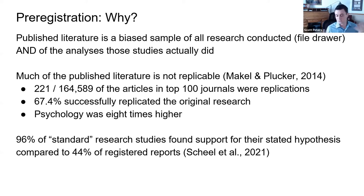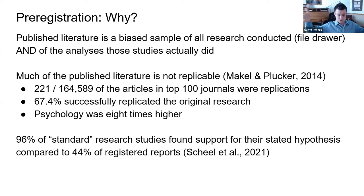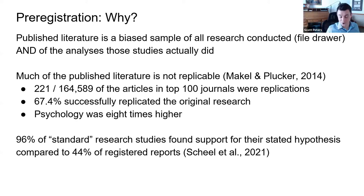In a regular study, if your first analysis isn't significant, you might try a different variable, exclude part of the sample, and eventually find a statistically significant result. There's an old adage that data will tell you whatever you want as long as you torture it long enough. A biased sample is one that does not accurately represent the larger population — and the published literature is essentially a biased slice of all possible research.